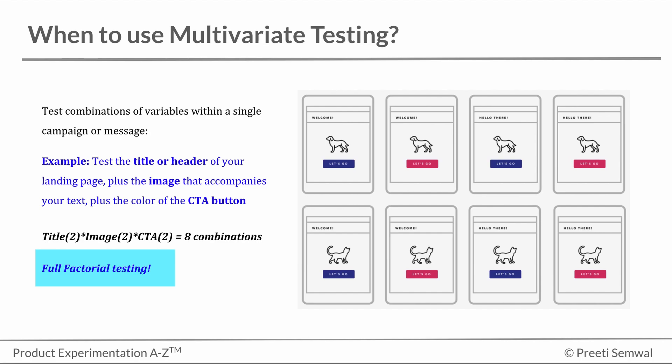After the test has been run, the performance of each page variation is compared. Now I'm not going into the analysis piece here as we are still learning the concept, but we will cover how to analyze results in section four. So once the performance of the page variations are compared, what emerges is a clear picture of which page is best performing. We also see which elements are most responsible for this performance.